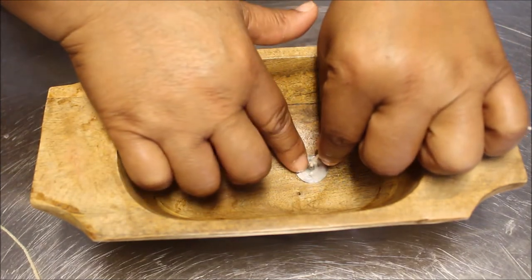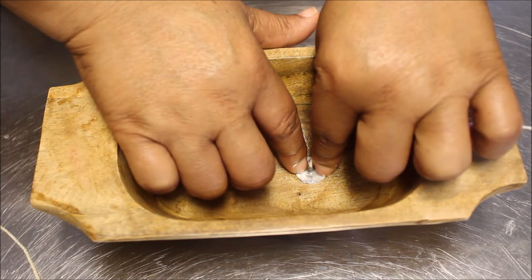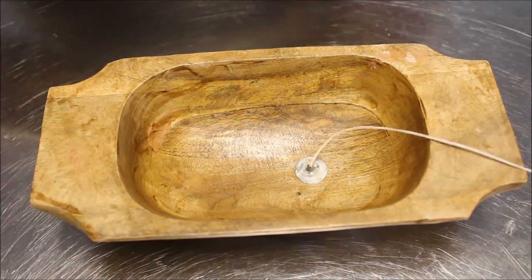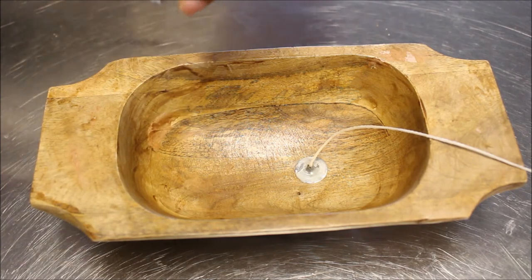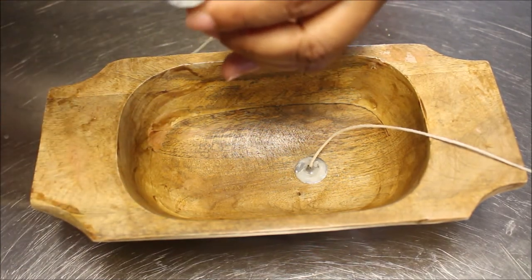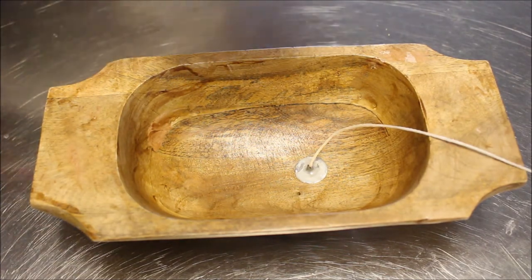And here I'm just recycling the wicks from the jar candles. I'm adding a dab of hot glue to the bottom of the wick to secure it in place so that it doesn't move when I pour the wax. With this particular size, you're going to need two in order for the candle to burn evenly. You just kind of have to gauge the size of your bowl as to how many wicks you're going to need.